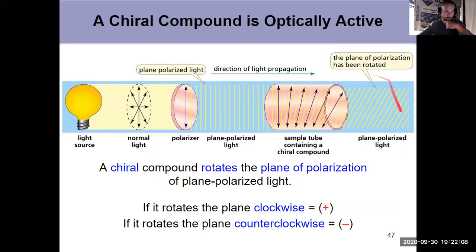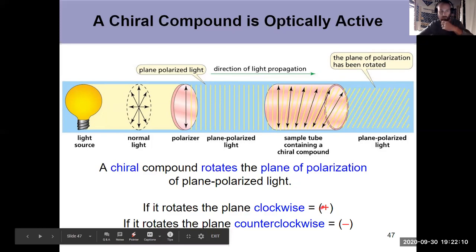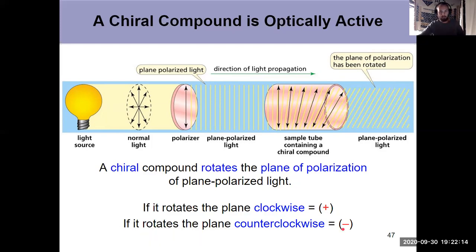And one of the two enantiomers rotates it clockwise, and the other enantiomer rotates it counterclockwise. And we can note that by plus, which means it rotates clockwise, and minus means it rotates counterclockwise. And the two enantiomers will rotate it the same amount to the same degree clockwise and the same degree counterclockwise for the enantiomers themselves.